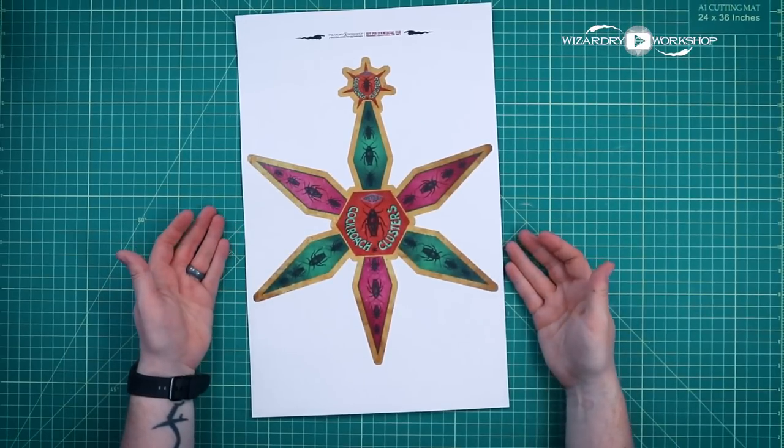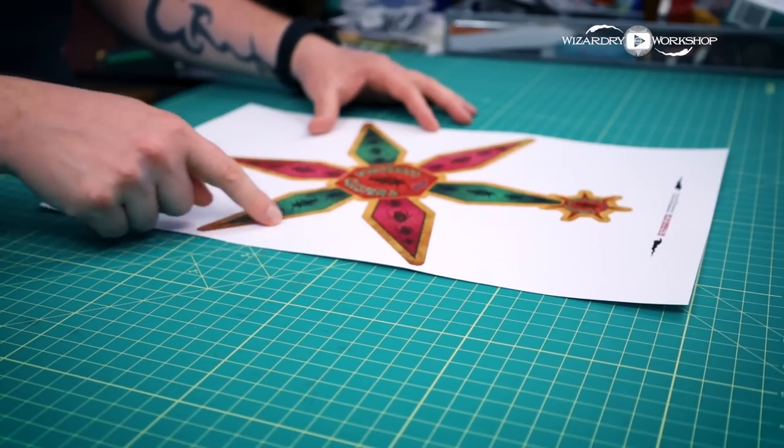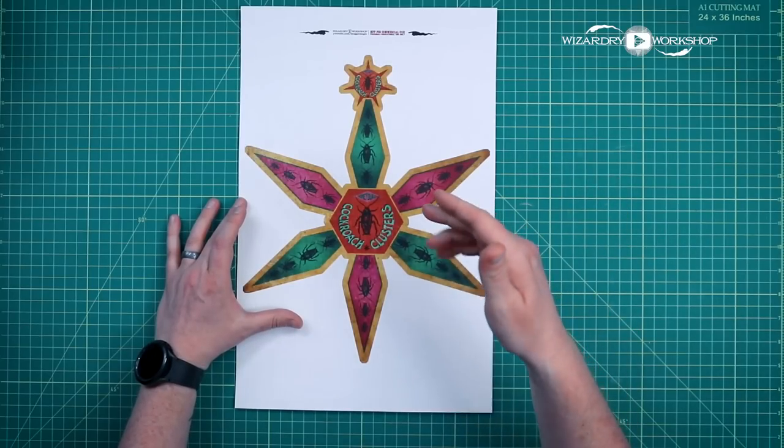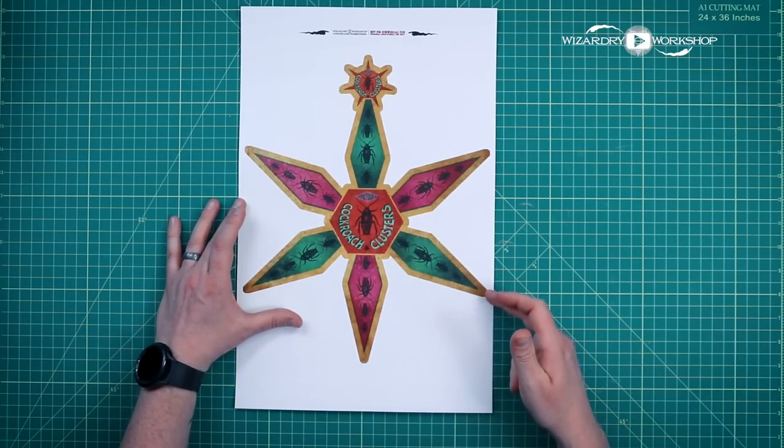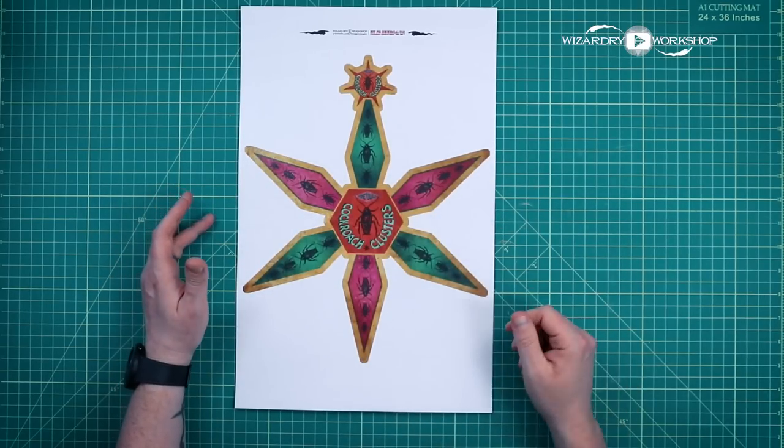First, let's talk about these templates. I printed the version that I'm going to cut out using my Cricut, so it has a thicker yellow border that's going to be cut and trimmed down. If you don't have a Cricut, you can print the other file with a smaller yellow border, and you can just follow along with your scissors and cut the whole thing out.